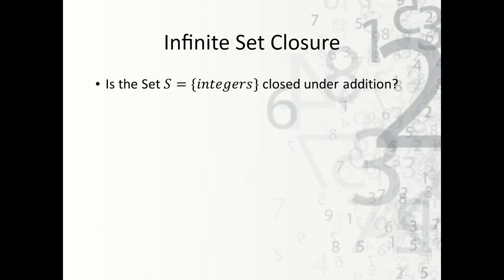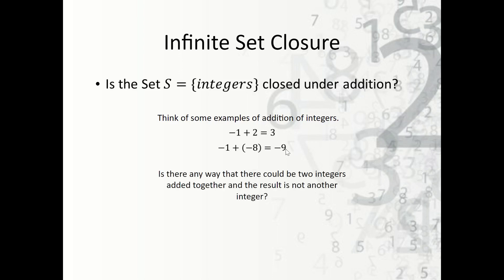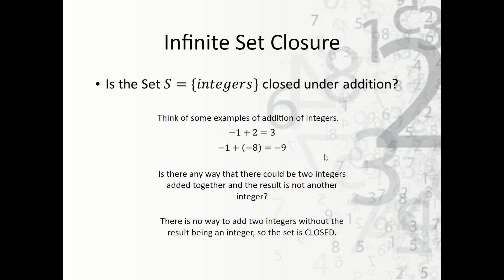Now let's look at the infinite set of integers. Is it closed under addition? We can't use a table, so we think of examples and try to determine if any two integers added together can produce a non-integer. There is no way to add two integers and get a fraction, a real non-integer, or a complex number. Therefore, the set of integers is closed under addition.